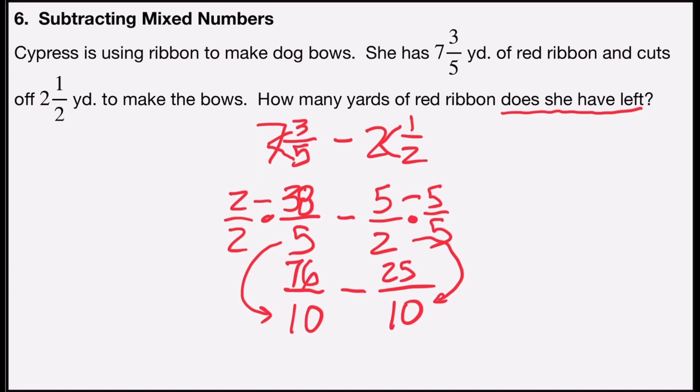And now all I have to do is subtract. Seventy-six tenths minus twenty-five tenths. I'll subtract the numerators. Seventy-six minus twenty-five is fifty-one. And we put that back over ten.